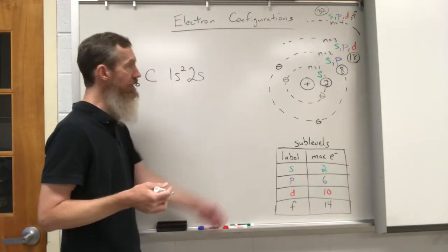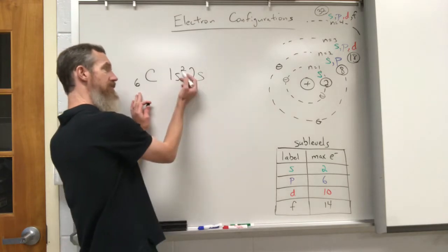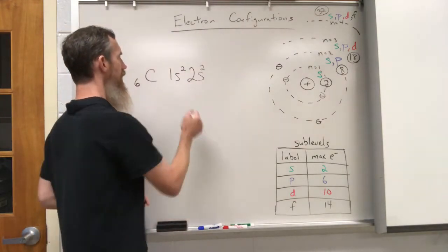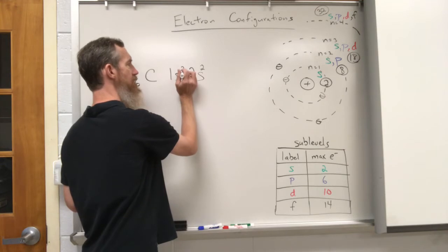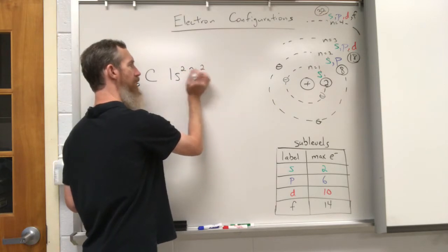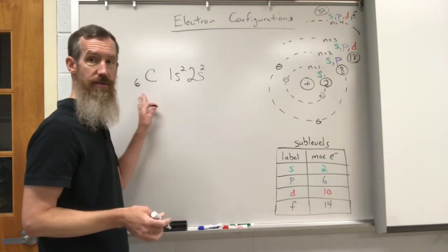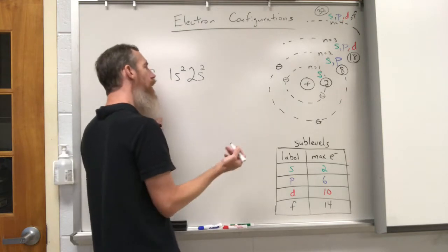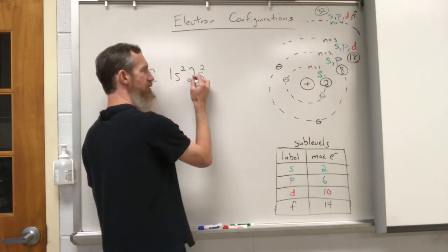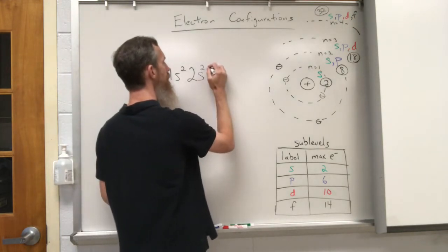The second energy level has its s electrons, and any s sub-level can hold up to two electrons. I need six total — I have two here, this can hold a maximum of two, so I put those electrons in. Now I have two and two electrons — that's four represented, but I'm not done. I need all six electrons, so I now have to go to the p sub-level. Some students just want to write a 'p,' but the notation requires you to write the two again.